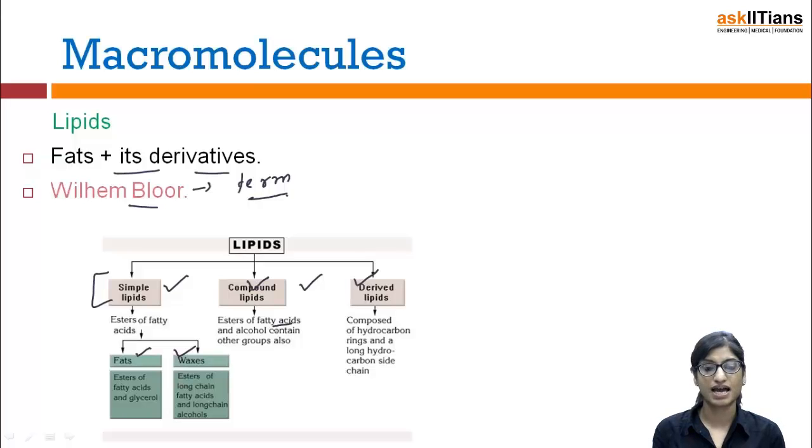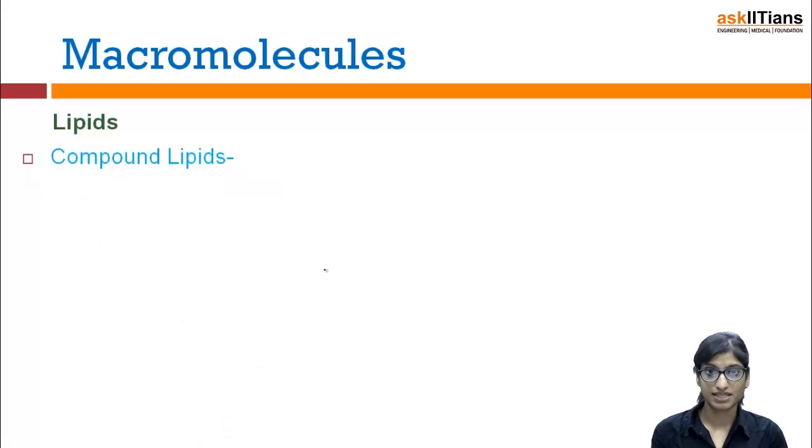Compound lipids: fatty acids and alcohol contain other groups also. Fatty acid plus other groups—alcohol and other derivatives. Derived lipids are composed of a hydrocarbon ring and a long hydrocarbon side chain, so they can be even more complicated than compound lipids. Let's study compound lipids first.